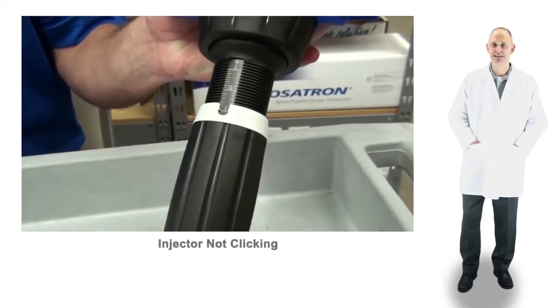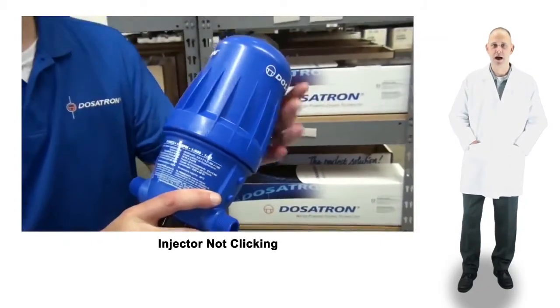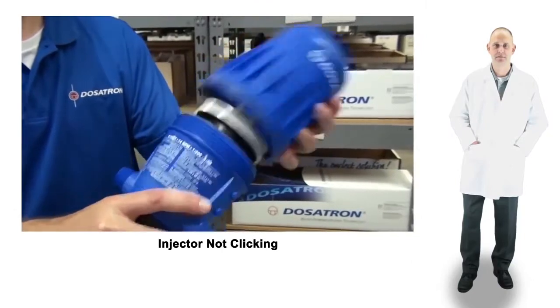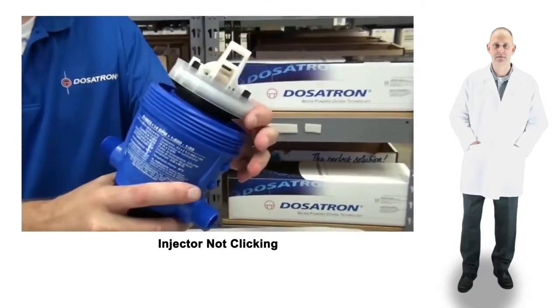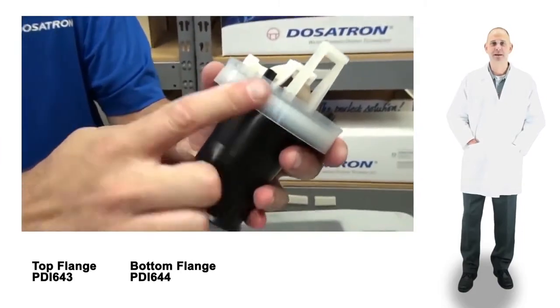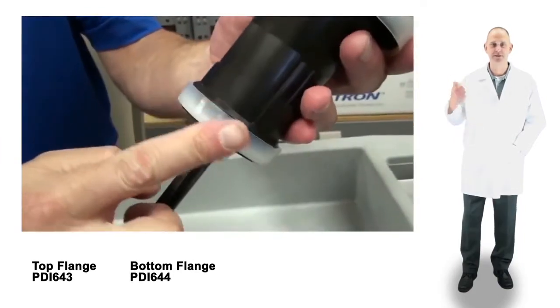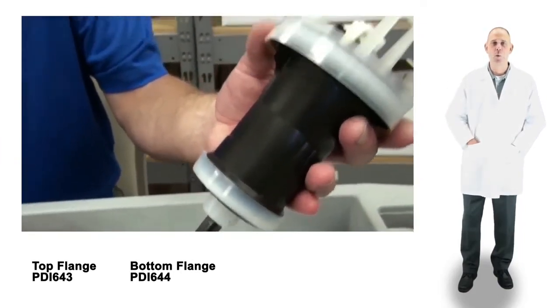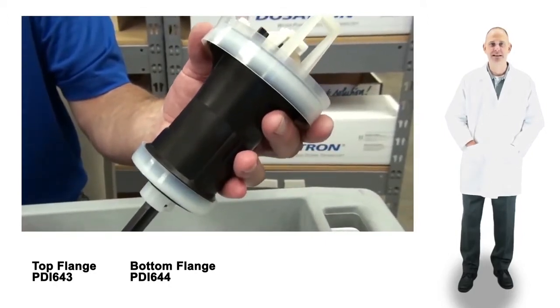If the injector isn't clicking, remove the blue bell housing and pull the piston straight out. Visually inspect the upper and lower white flanges on the piston shell. If they are worn or have scratches, the flanges need to be replaced.